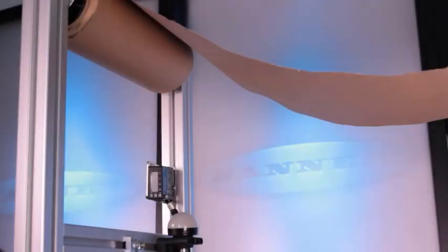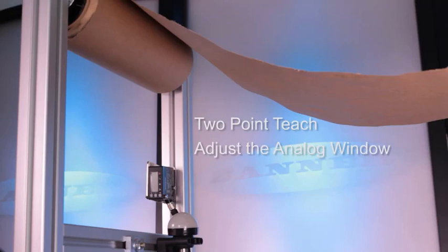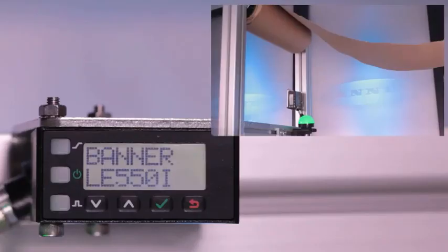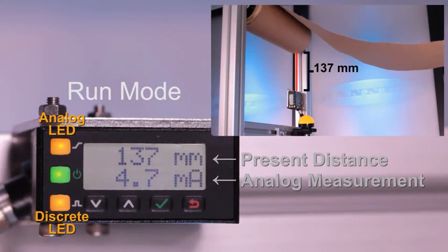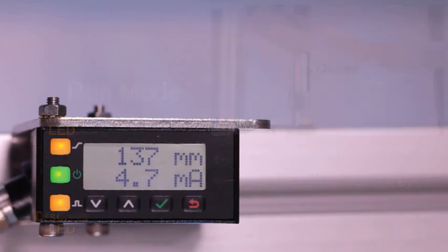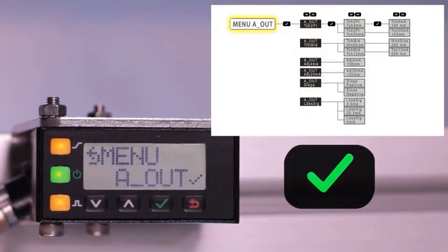This video tutorial will demonstrate how to use the two-point teach and adjust options to set the analog window limits for roll diameter applications. When first powered on, the LE begins in run mode, displaying the present distance and analog measurement. Click the enter button to access the sensor menu.